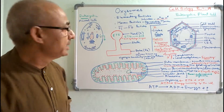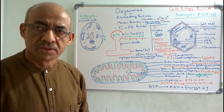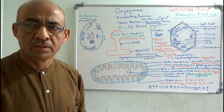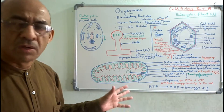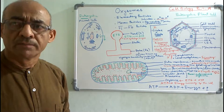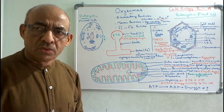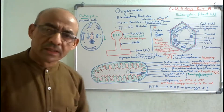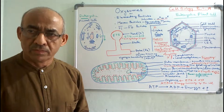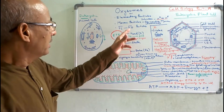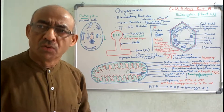Another name is Moran particles, because there was a scientist namely Fernandez Moran who first time discovered or observed these small particles on the surface of the inner membrane of mitochondria. To give him honor, these particles are called as Moran particles. Another name of the oxysome is F1-F0 particles.